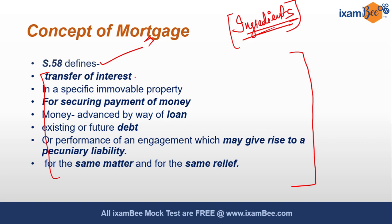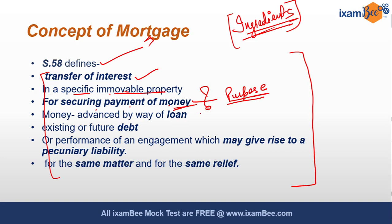Mortgage is basically a transfer of an interest. You are not selling your property, but you are just transferring your interest in a specific immovable property. And that interest you are transferring for a purpose — that is, to secure some payment of money. For example, if you are taking a loan, then for security, if somebody is lending you money, then what are you giving him in return as security? You can give that security in the form of your interest existing in the immovable property, and that is known as mortgage.